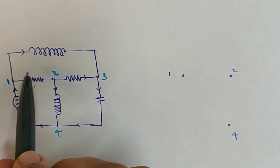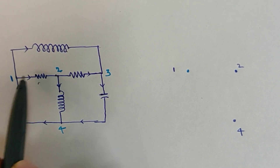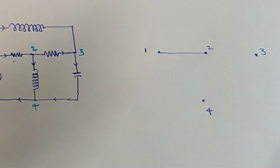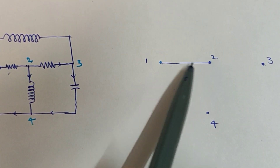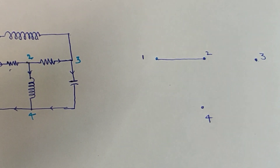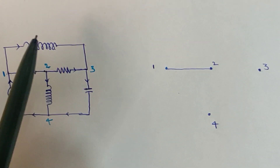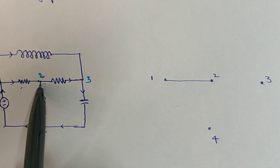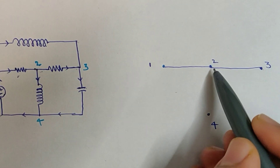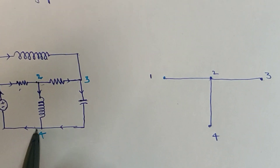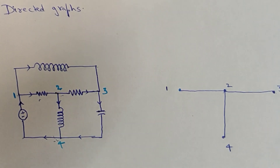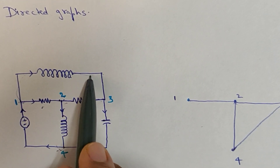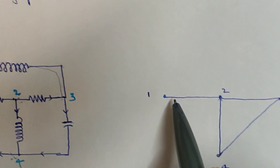After naming the points, we represent all the elements using lines. Suppose we have a resistor between nodes one and two — we draw a line between one and two. In the graph, the line represents an element; we don't care which element it is. Whether it is a resistor, inductor, or capacitor, all are represented by a line. Between two and three we have a resistor, between three and four a capacitor, between two and four an inductor, and between one and three also an inductor.